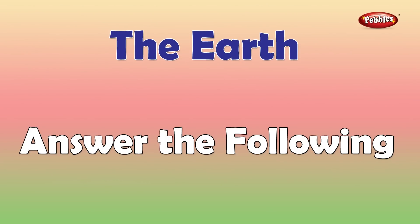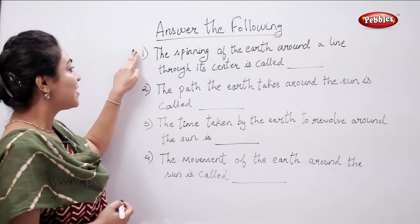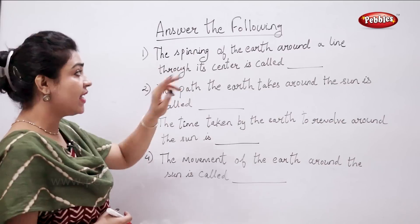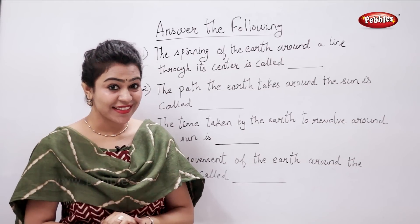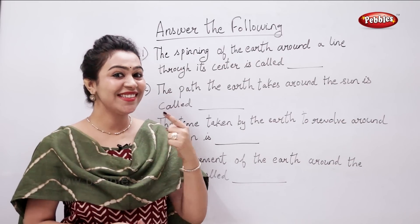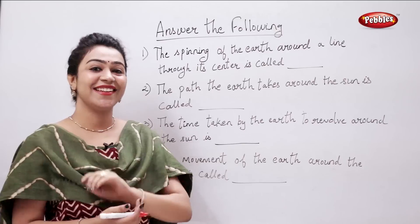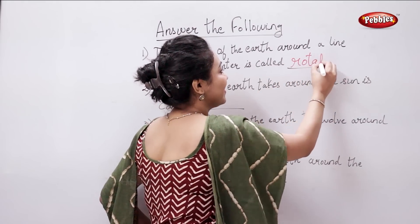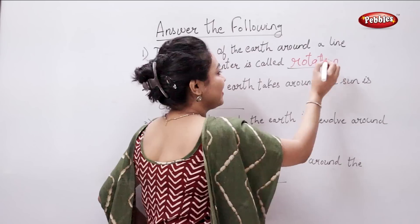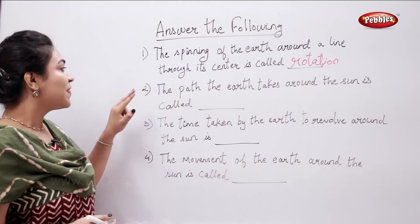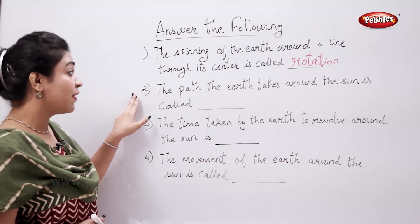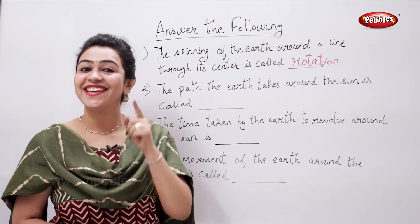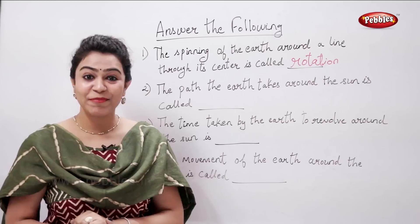Answer the following. The spinning of the earth around the line through its center is called? Rotation. The path the earth takes around the Sun is called? Orbit.